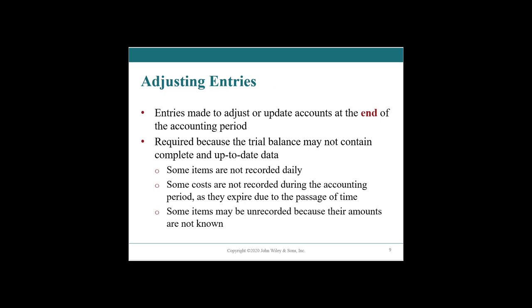Adjusting journal entries are accounting entries used to adjust or update accounts at the end of the period. The end of the period is whatever reporting period you use for your users — it might be a quarter or a year. It rarely would be a week or a day, because then you'd just be doing a huge amount of work. Typically it's a quarter or a year.